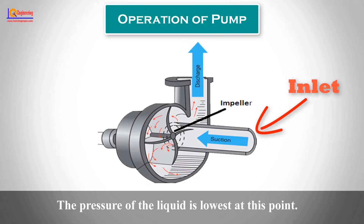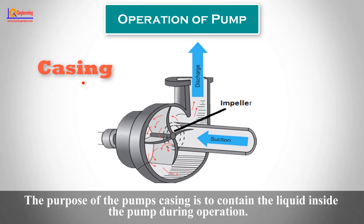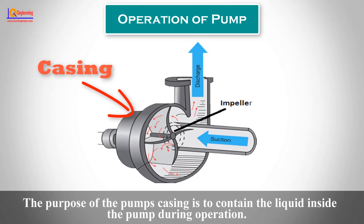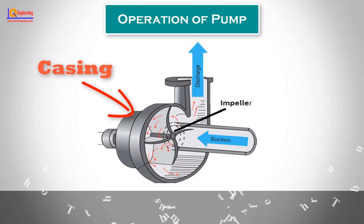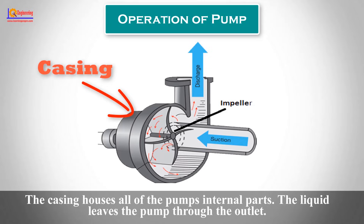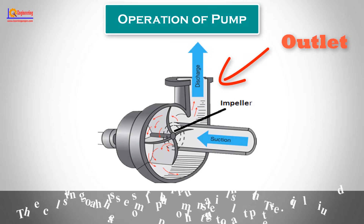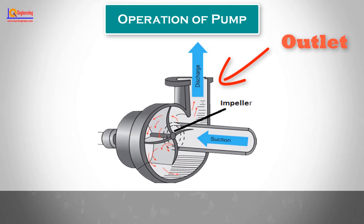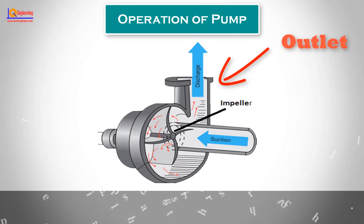The pressure of the liquid is lowest at this point. The purpose of the pump's casing is to contain the liquid inside the pump during operation. The casing houses all of the pump's internal parts. The liquid exits the pump through the outlet, also called the discharge side. The pressure of the liquid is highest at this point.